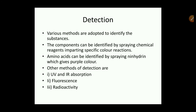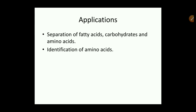Amino acids can be identified by spraying ninhydrin, which gives a purple color. Other detection methods include UV and IR absorption, fluorescence, and radioactivity. Applications of paper chromatography include the separation of fatty acids, carbohydrates, and the identification of amino acids.